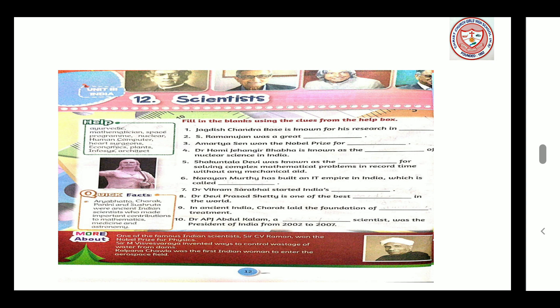Number 2: S. Ramanujan was a great mathematician. Number 3: Amartya Sen won the Nobel Prize for Economics. Number 4: Dr. Homi Jahangir Bhabha is known as the Architect of Nuclear Science in India.